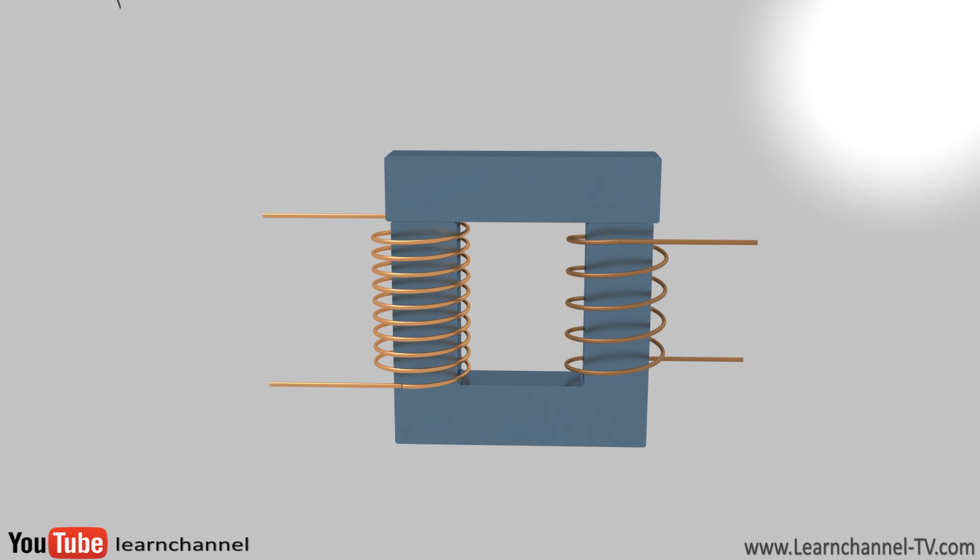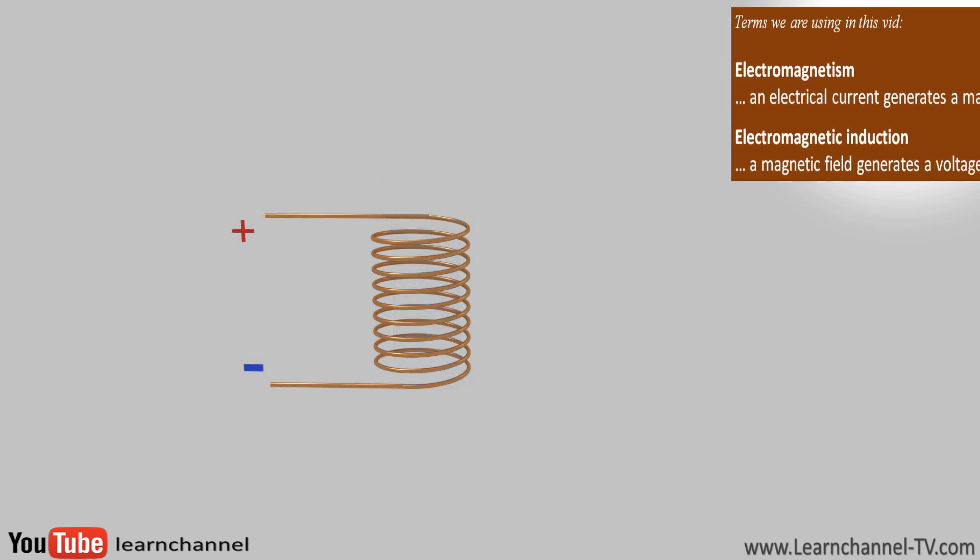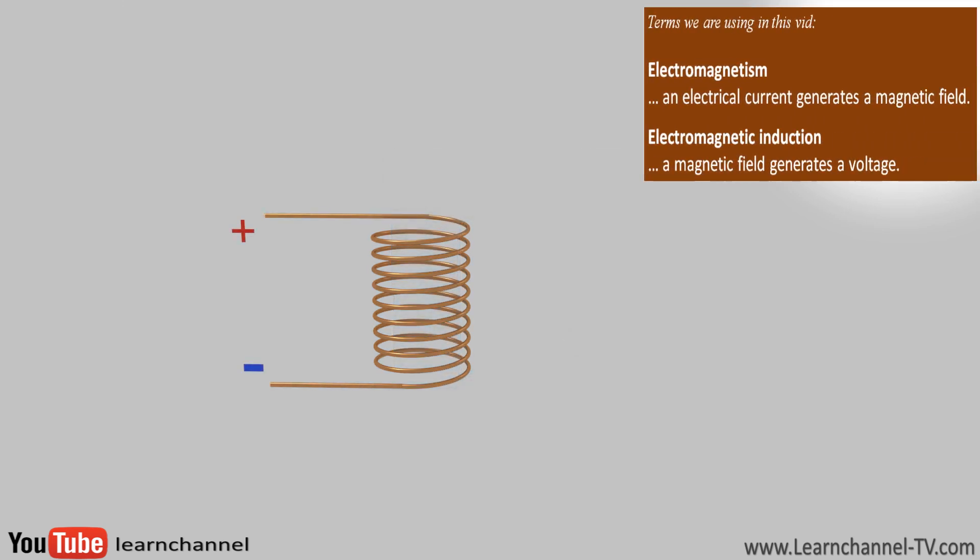But how can one draw from the output winding voltage as soon as the input winding is connected to AC voltage? These two windings are not electrically connected to each other. The answer is they are magnetically coupled. Let's explain.